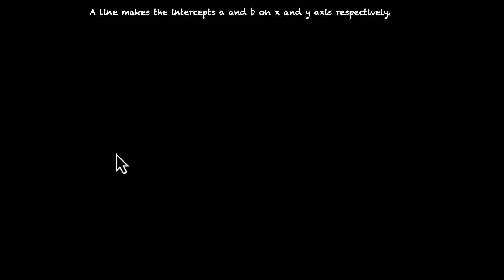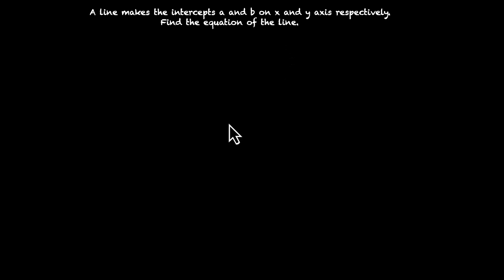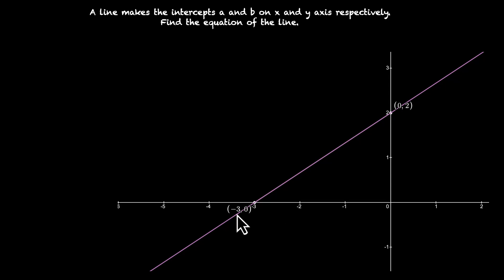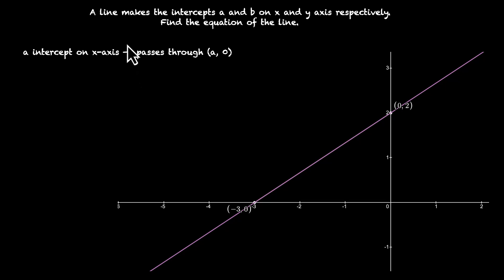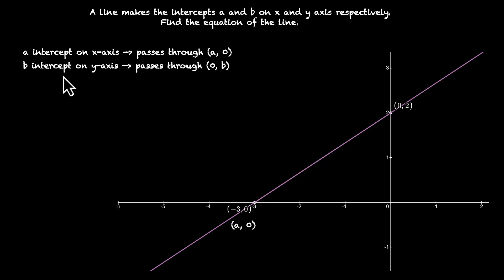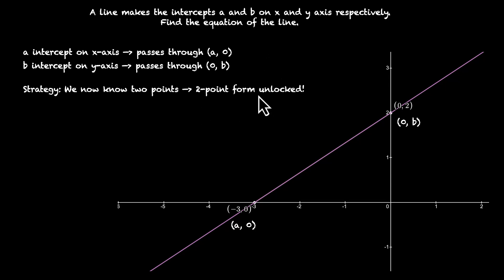Now let's generalize this. A line makes intercepts a and b on x and y axis respectively — find the equation of the line. This time the intercepts are a and b. If a is the x intercept, the line passes through a comma 0. If b is the y intercept, it passes through 0 comma b. Now that we have two points, we can use any of the forms we have previously derived. In this case we'll use the two point form.